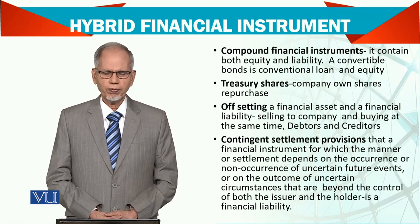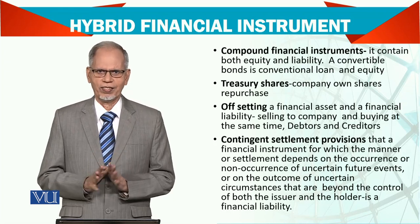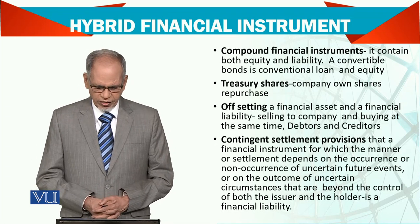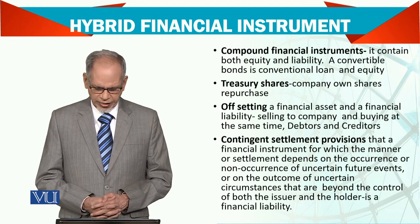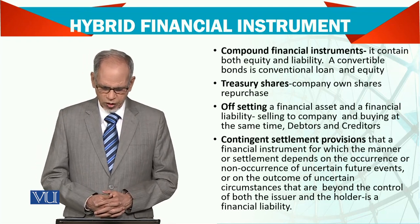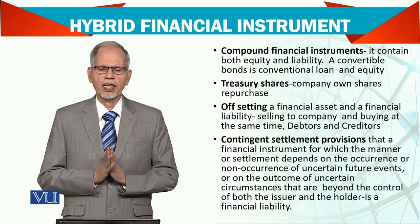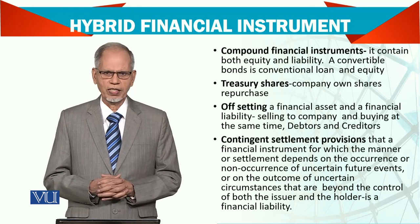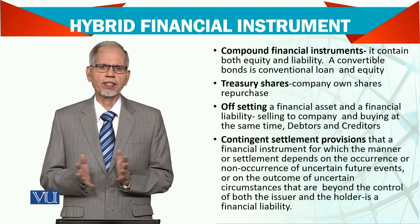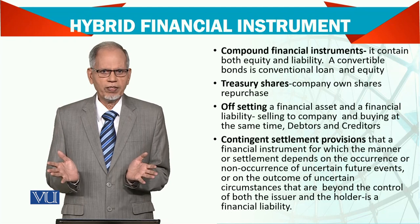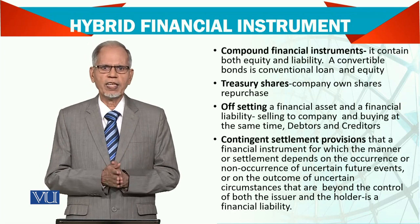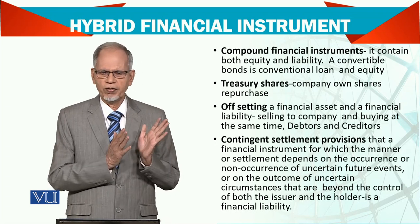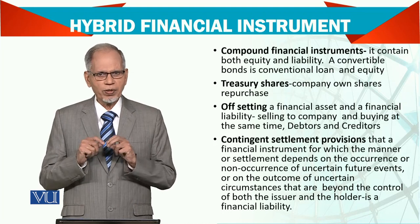Contingent settlement provision depends on certain conditions or events occurring. It is a financial instrument for which the manner of settlement depends on the occurrence or non-occurrence of uncertain future events, or on the outcome of circumstances beyond the control of both the issuer and the holder. For example, you hold a share but you do not know whether the company will declare dividends. Until declared, you cannot record it; once declared, it becomes receivable and can be recorded in your books.